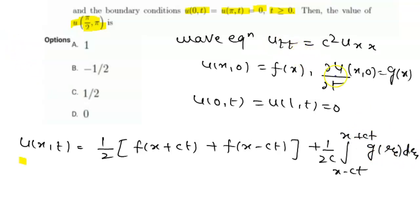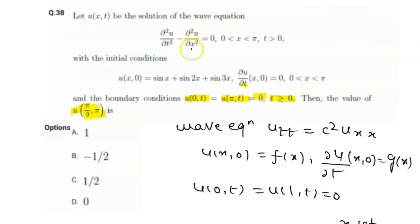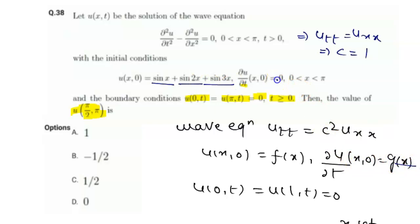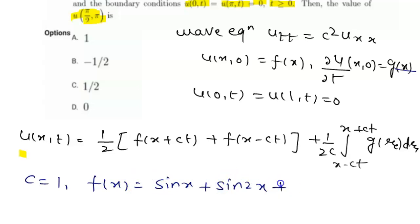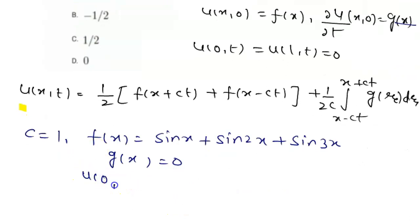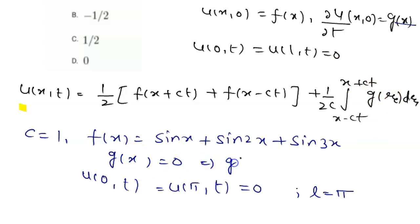Comparing with the given equation, u_tt = u_xx, so c = 1. Therefore f(x) = sin x + sin 2x + sin 3x, and g(x) = 0. Also l = π by comparing boundary conditions. Since g(x) = 0, the integral term vanishes, and u(x,t) simplifies to (1/2)[f(x+t) + f(x−t)].